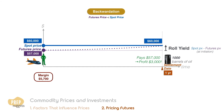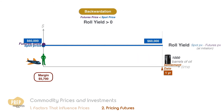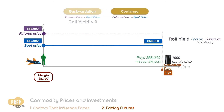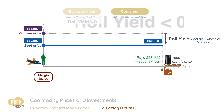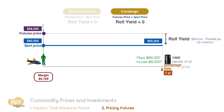If the contract was initiated in a backwardation situation, as in this case, the roll yield will be positive. If the contract is initiated in a contango situation, the roll yield will be negative.